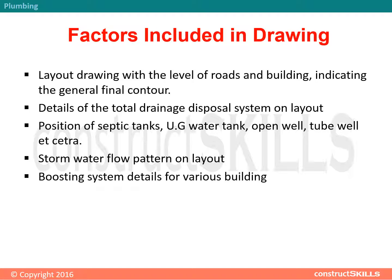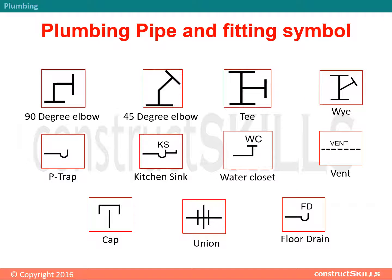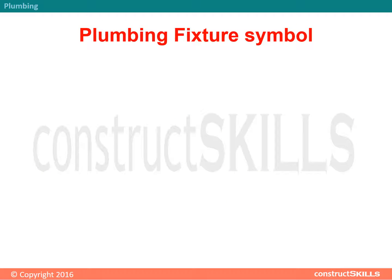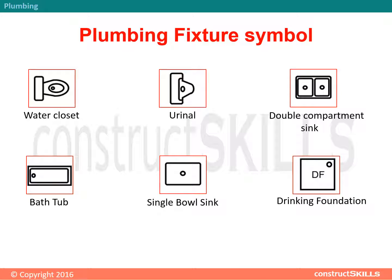Stormwater flow pattern on layout, boosting system details for various buildings. Plumbing pipe and fitting symbols: 90-degree elbow, 45-degree elbow, T, Y, P-trap, kitchen sink, water closet, vent cap, union, floor drain.